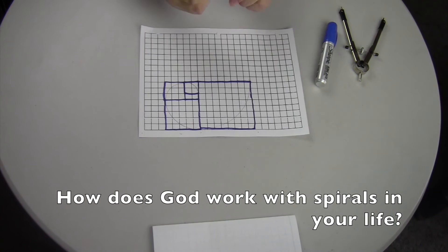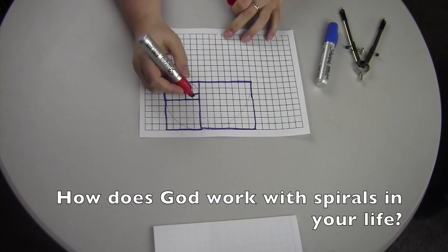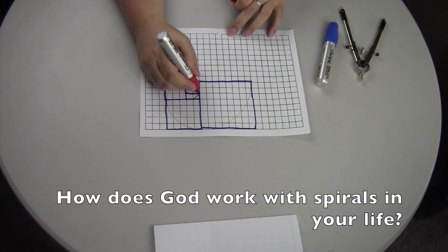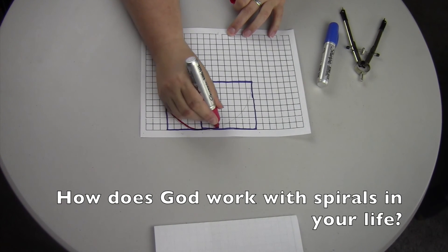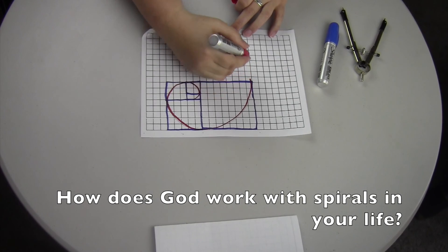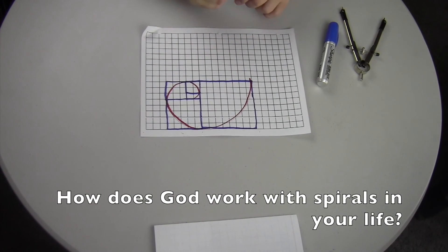Now we're going to take our red marker and just follow that line all the way around. And then once you get bigger and bigger, you're making a conch shell. That's how you make the golden spiral.